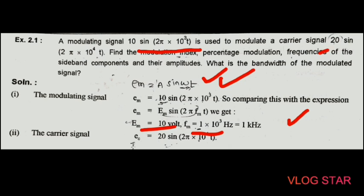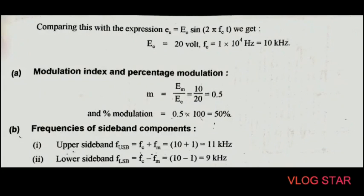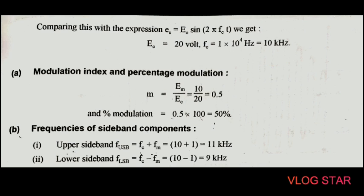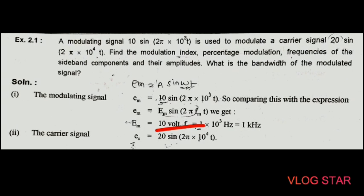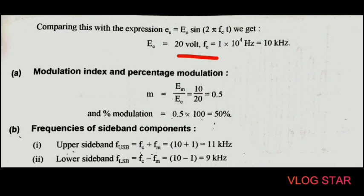The second signal is 20 sin(2π × 10⁴ t). Comparing with the standard carrier signal equation, E_c = 20 V and f_c = 10 kHz. First parameter: modulation index, m = E_m / E_c = 10 / 20 = 0.5. For percentage modulation, multiply by 100: 0.5 × 100 = 50%.